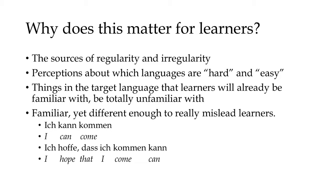So basically we looked at three ways that languages can be similar: a genetic relationship — a common ancestry; neighbors that have borrowed from each other through proximity; or forces of globalization that brought languages and peoples into contact across a large distance.